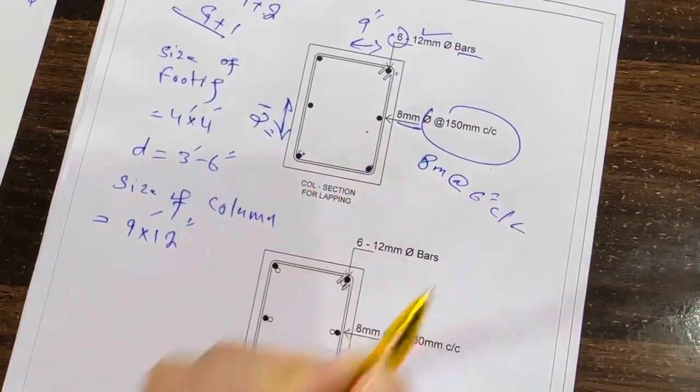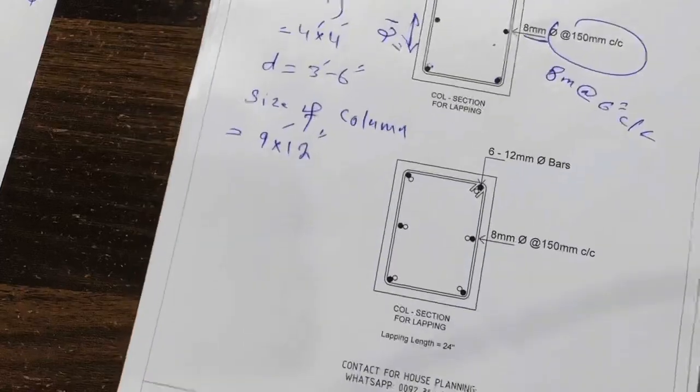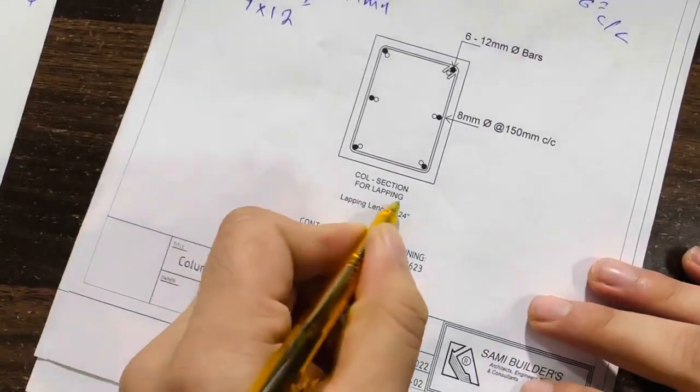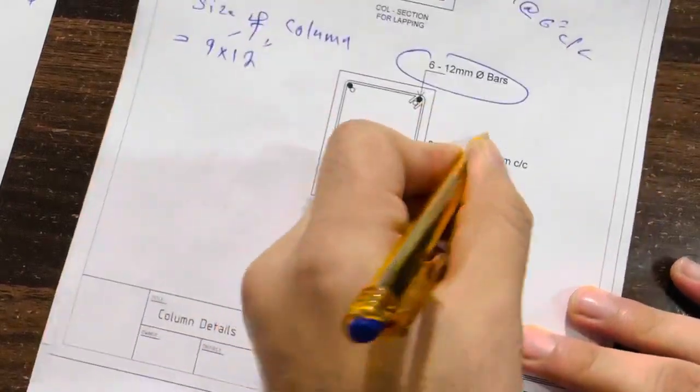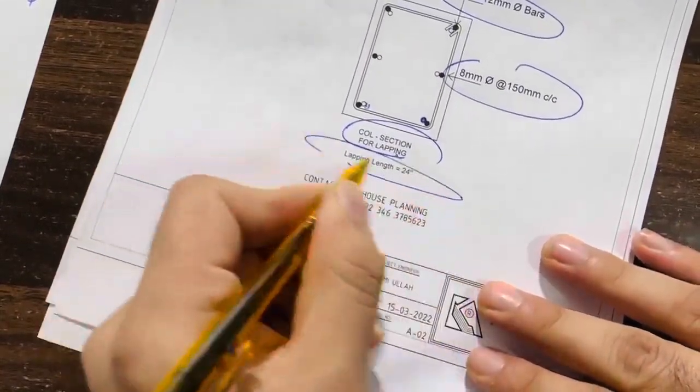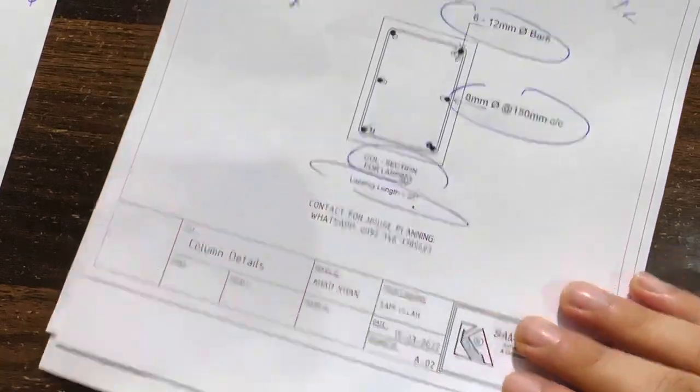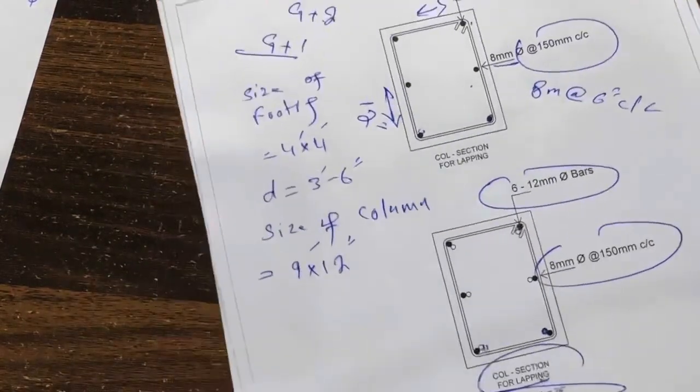You can see the column section for the lapping. The size is same for the steel reinforcement. The lapping length is 24 inches for this column. This is the layout plan inside the footing.